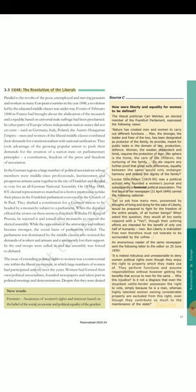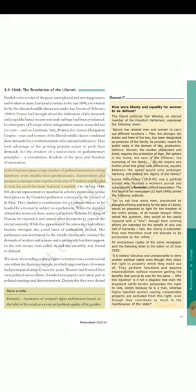Section 3.3: 1848 — The Revolution of the Liberals. Parallel to the revolts of the poor, unemployed and starving peasants and workers in many European countries in the year 1848, a revolution led by the educated middle classes was underway. Events of February 1848 in France had brought about the abdication of the monarch and a republic based on universal male suffrage had been proclaimed. In other parts of Europe where independent nation states did not yet exist, such as Germany, Italy, Poland, the Austro-Hungarian Empire, men and women of the liberal middle classes combined their demands for constitutionalism with national unification. They took advantage of the growing popular unrest to push their demands for the creation of a nation state on parliamentary principles — a constitution, freedom of the press and freedom of association. In the German regions, a large number of political associations whose members were middle class professionals, businessmen and prosperous artisans came together in the city of Frankfurt and decided to vote for an all-German national assembly. On the 18th of May 1848, 831 elected representatives marched in a festive procession to take their places in the Frankfurt parliament convened in the church of Saint Paul. They drafted a constitution for a German nation to be headed by a monarchy subject to a parliament. When the deputies offered the crown on these terms to Friedrich Wilhelm IV, King of Prussia, he rejected it and joined other monarchs to oppose the elected assembly. While the opposition of the aristocracy and military became stronger, the social bases of parliament eroded. The parliament was dominated by the middle classes who resisted the demands of workers and artisans and consequently lost their support. In the end troops were called in and the assembly was forced to disband.